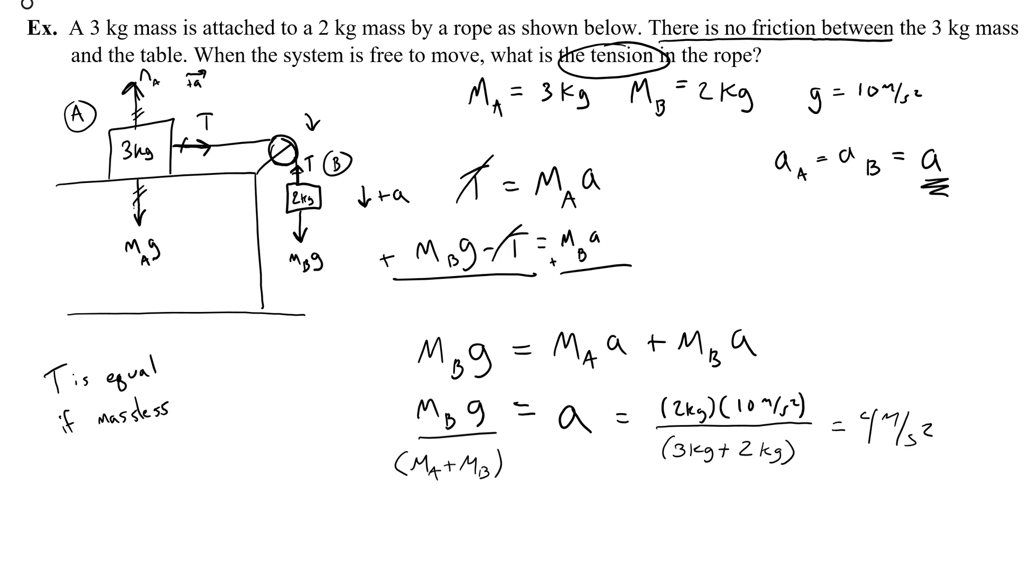Now let's do our Blue's Clues moment. If I know the acceleration is 4 meters per second squared, what do I do with that? Where does it go? How do I find the tension? Over here, over here. You just plug that acceleration into either equation and find T. So let's do that.